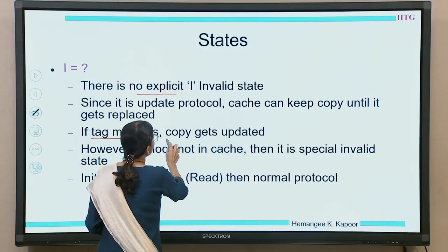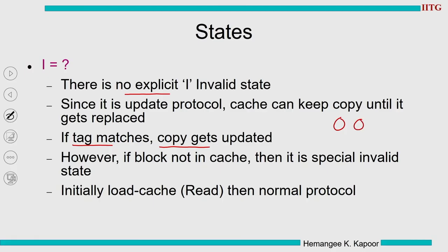Suppose this cache does not have the data block and data is going onto the bus — this cache picks up the value if the tag matches. For example, if we are transmitting X=2 from one processor, the caches with matching tags pick it up; others ignore it. This essentially corresponds to the invalid state in other protocols, but here it is not explicitly mentioned.